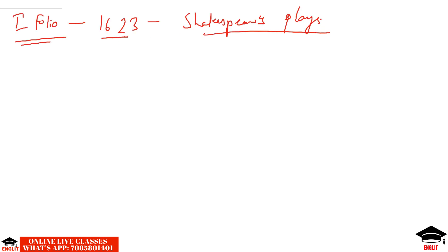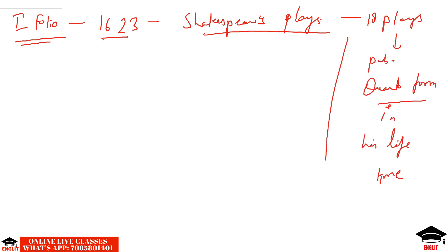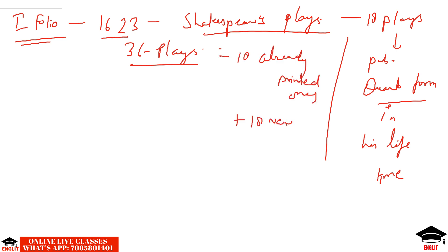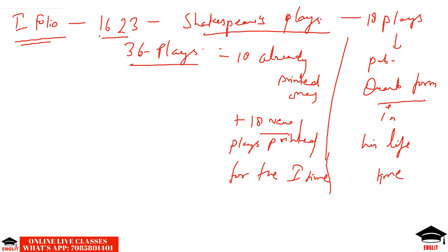Shakespeare's plays were first published in folio form in 1623. Prior to that, 18 of Shakespeare's plays were published in quarto form during his lifetime. In 1623, 36 plays were published — 18 already printed and 18 new ones, published for the first time. This was the corrected version of his plays, as the 18 plays published in his lifetime had discrepancies of text; they were short or labeled as bad quartos.